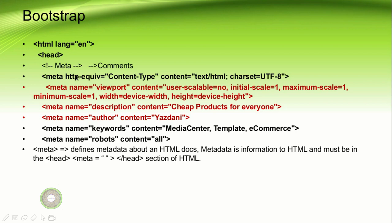This is general HTML information about your document. You can use HTTP-equivalent content-type — for example, if you set a refresh to 30, the page will refresh every 30 seconds. Most websites also have a content-type, instructing HTML that the content type is text/HTML. And charset is UTF-8 — the character set is Unicode, as we explained in C++.